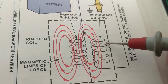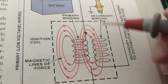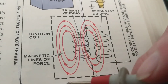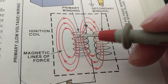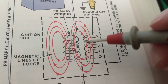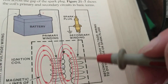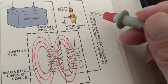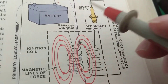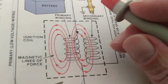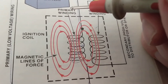Turning the switch on and off induces a voltage from the collapsing magnetic field. That collapsing magnetic field is induced into the secondary, and where does the secondary go? To your spark plug.